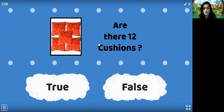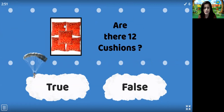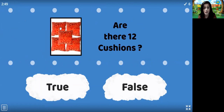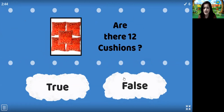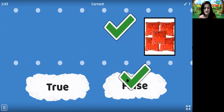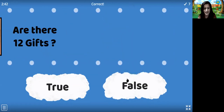Are there 12 cushions? Come on children, we can make it out. That is not 12. Come on, let's count and check. How many are there? 1, 2, 3, 4, 5. So it's false.